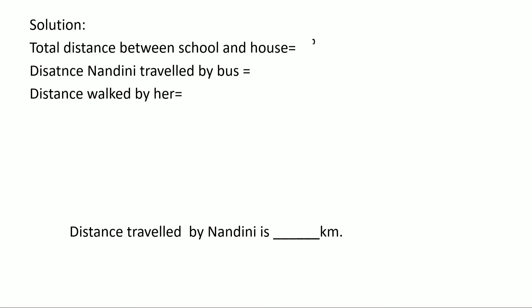Total distance between school and house is 9/10 kilometer. Distance Nandini traveled by bus is 1/2 kilometer. Distance walked by her would be 9/10 minus 1/2. These are unlike fractions. Convert into like fractions first, so LCM of 10 and 2 would be: